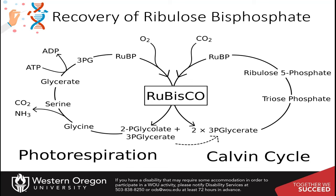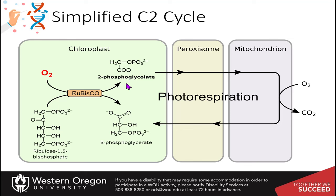The 2-phosphoglycolate can be reconverted to 3-phosphoglycerate, but it is an incredibly painful process to do this. If you have the oxygenase activity, you produce one molecule of 3-PGA and one molecule of 2-phosphoglycolate in the chloroplast.